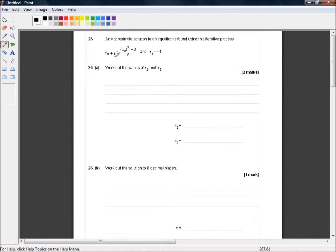Hello and welcome to the AQA 8300 series GCSE higher tier maths paper. This is 8300/3H. This is a calculator paper and we're picking up in question 26.